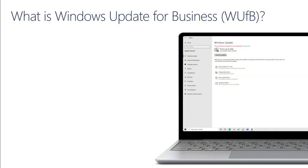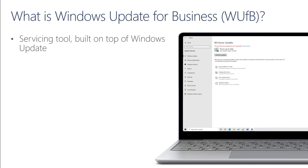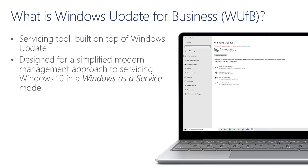What is Windows Update for Business? Windows Update for Business is a servicing tool built on top of the Windows Update service. Windows Update is a service that delivers software updates for Windows and other Microsoft products — the same service used by millions of consumers around the world, servicing billions of devices. Windows 10 introduced a new way to build, deploy, and service Windows, called Windows as a Service.